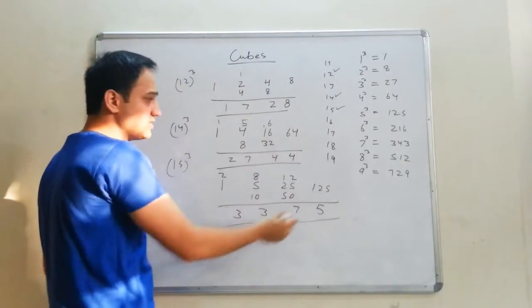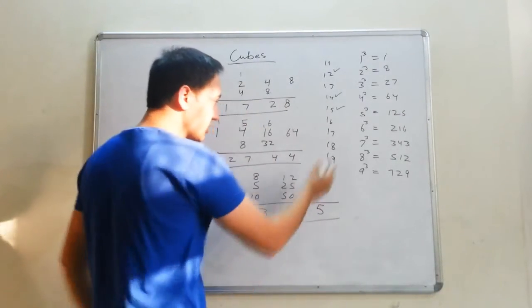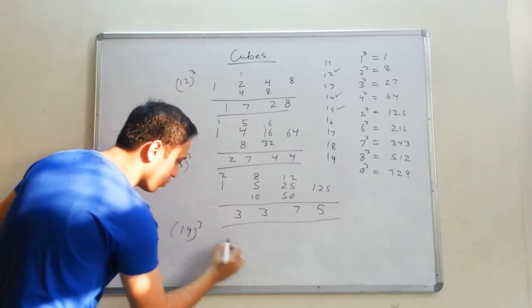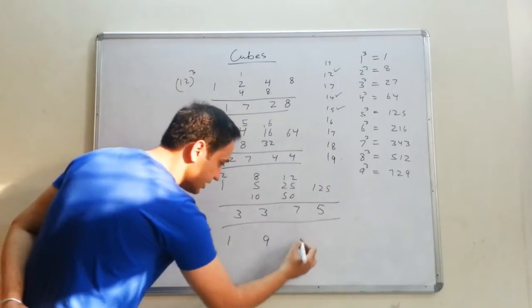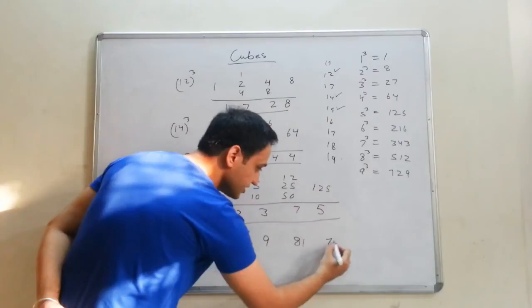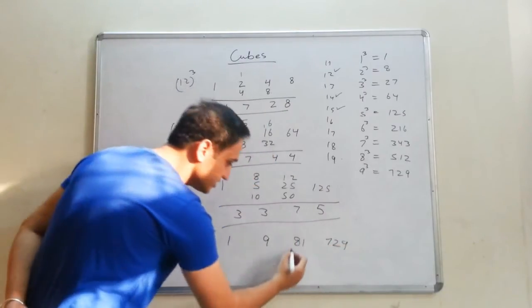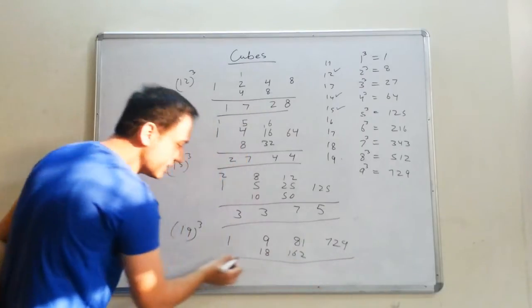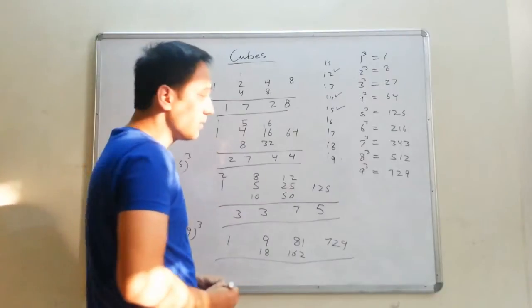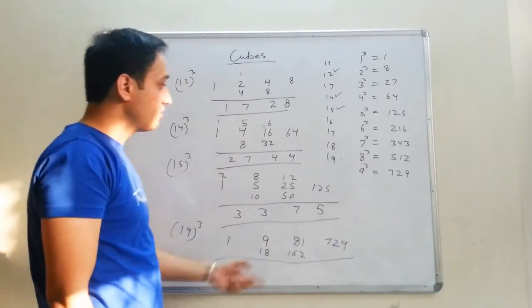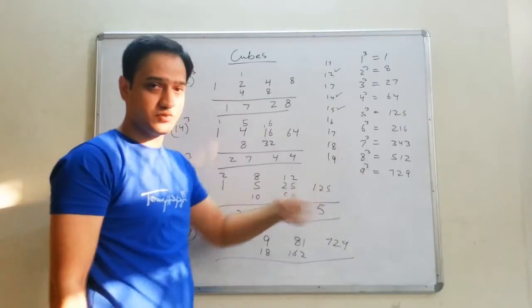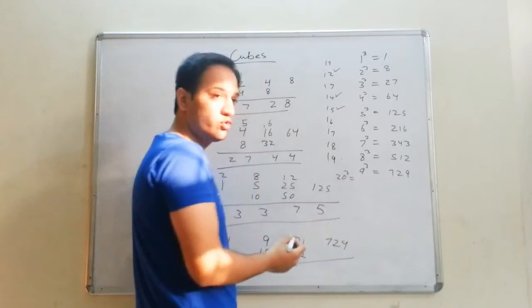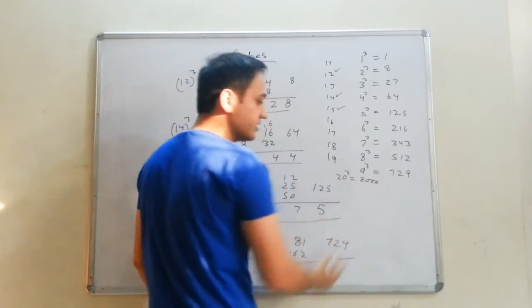You can apply this formula up to 19. For example, what is a cube of 19? You do: 1, 9 — square of 9 is 81, cube of 9 is 729. Double these digits: 162 and 18. Add these digits and you'll get your answer. This formula works till 19. For 20, if 2 cube is 8, then add three zeros — the answer is 8,000.